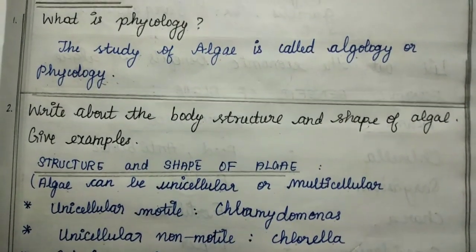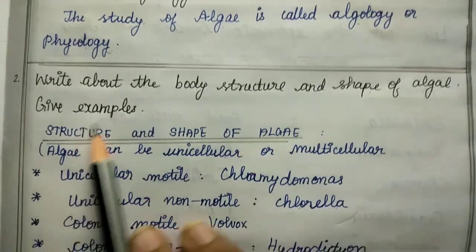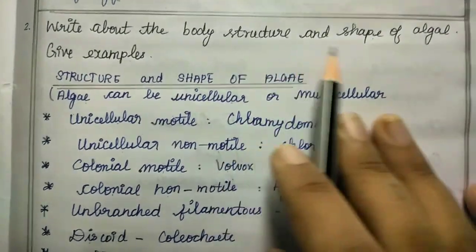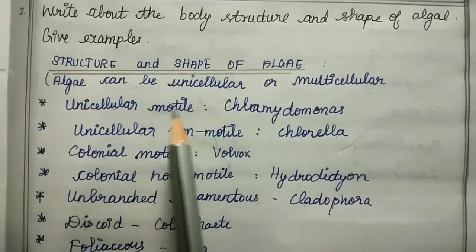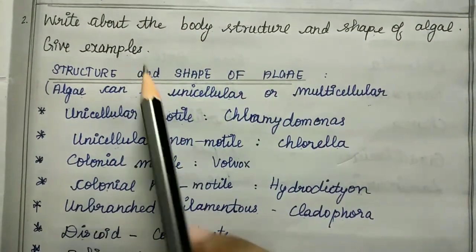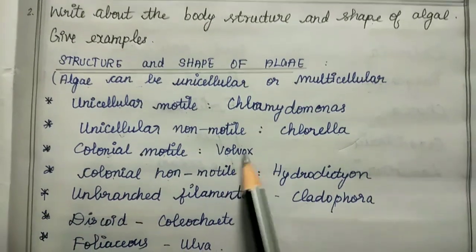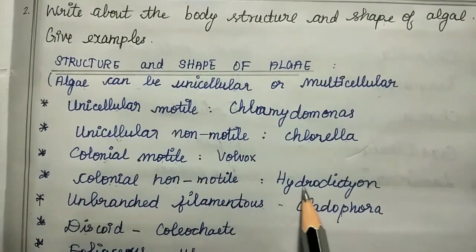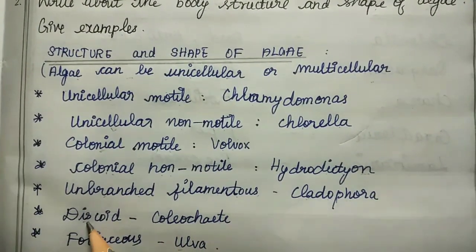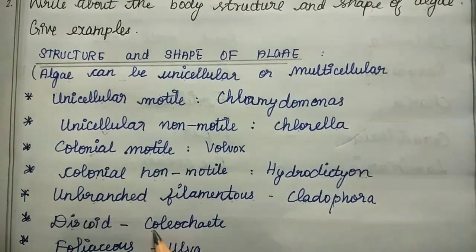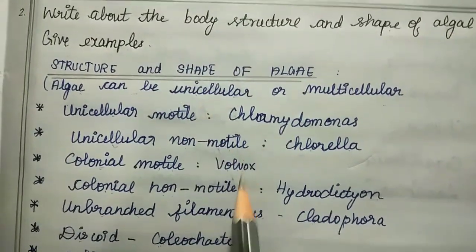Second question: write about the body structure and shape of algae, give examples. The structure and shape of algae can be unicellular and multicellular. Unicellular motile example is Chlamydomonas. Unicellular non-motile is Chlorella. Colonial motile is Volvox, and colonial non-motile is Hydrodictyon. Unbranched filamentous is Cladophora, and discoid is Coccolith.